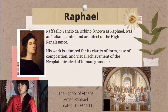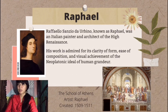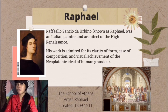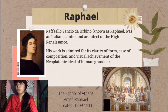The last artist we will talk about is Raphael. Raphael Sanzio, known simply as Raphael, was an Italian painter and architect of the High Renaissance. His work is admired for his clarity of form, ease of composition, and visual achievement of the Neoplatonic ideal of human grandeur. He is very famous for painting the Vatican walls — one of the masterpieces being The School of Athens, created between 1509 and 1511.